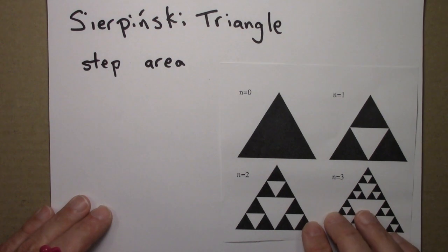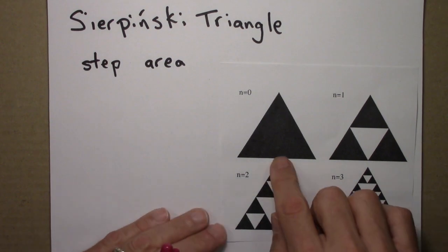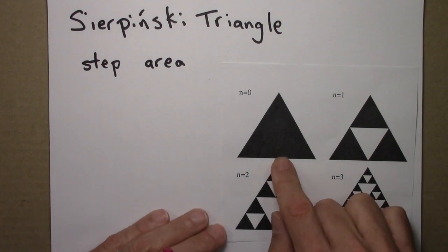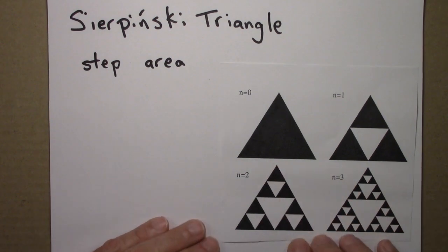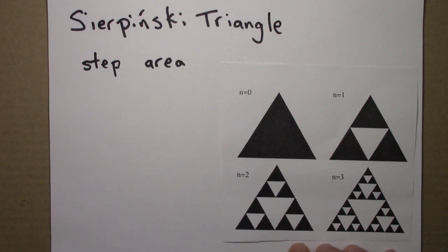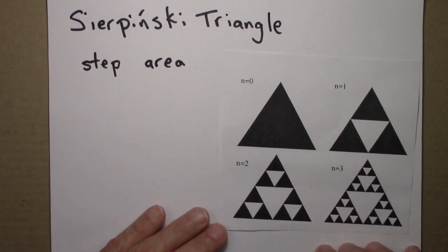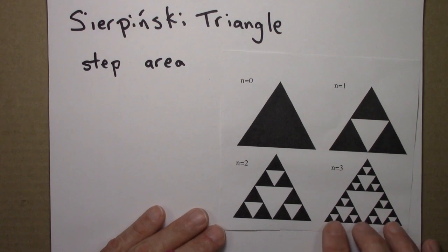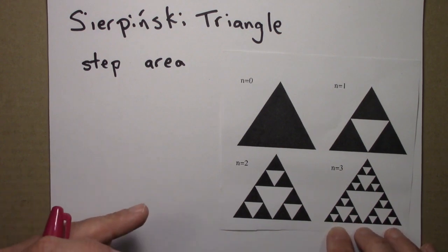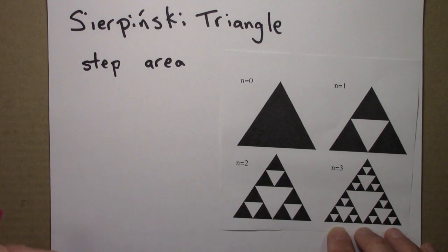In this video, we'll think about the area and the perimeter of the Sierpinski Triangle. This will be similar to the calculations or considerations we used when figuring out the length of the Koch curve. And in the course of this video, I'll provide solutions to the previous quiz.